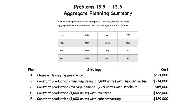Putting together a summary of the five different plans: Plan A was a chase strategy with varying workforce, with a total cost of $191,000. Plan B used constant production to meet minimum demand of 1,400 units with subcontracting, costing $214,000. Plan C used constant production based on average demand of 1,775 units, relying on stockouts, for a total cost of $85,500. Plans D and E both used constant production at 1,600 units — either with overtime or subcontracting — costing $122,000 and $129,000 respectively. As it turns out, Plan C, constant production based on average demand while risking stockouts, ended up being the lowest cost option at $85,500.